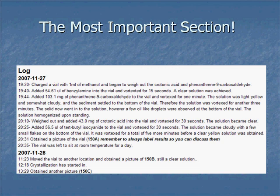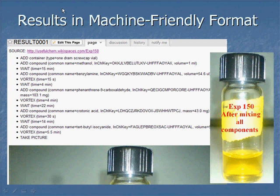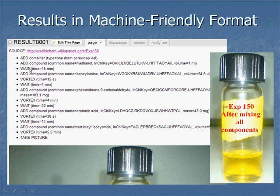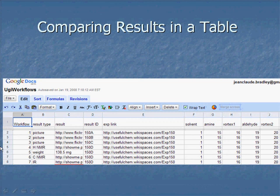One of the things we're getting involved with now is actually moving from not only the human-readable format but rewriting these logs in a machine-friendly format. In the log, whether in a paper notebook or on the wiki, I'm not telling my students how to write — I'm just saying record what you did, what you observed. But we can translate that into a script where every term has a specific meaning: I can add something, I can vortex, I can wait. All of these things can be reproduced and understood by a machine and indexed accordingly. Looking at results that way enables me to re-slice the data and view it in ways completely impossible with a paper notebook.